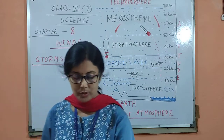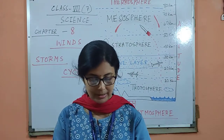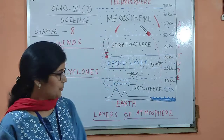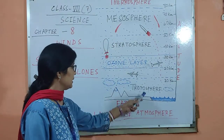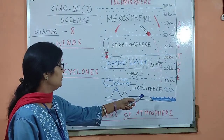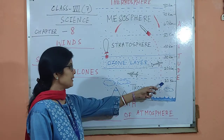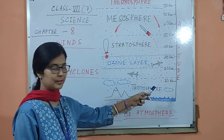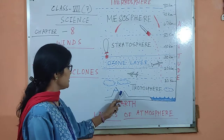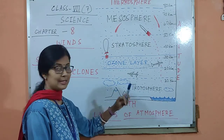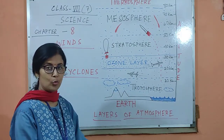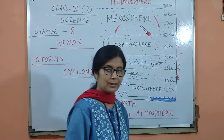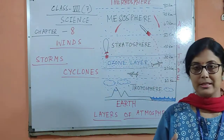First of all we begin with the lowest layer, that is the troposphere. As you can see on the altitude scale, it extends around 10 km up from the earth surface. It is the nearest layer and the most dense layer — troposphere is the most dense layer.